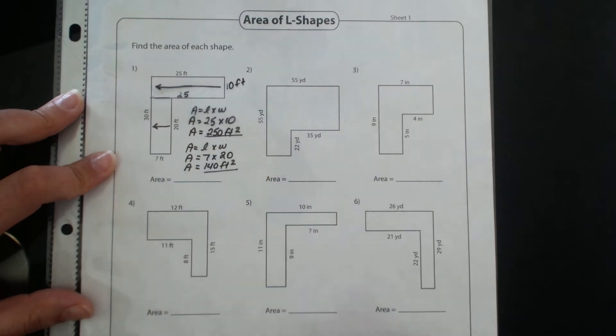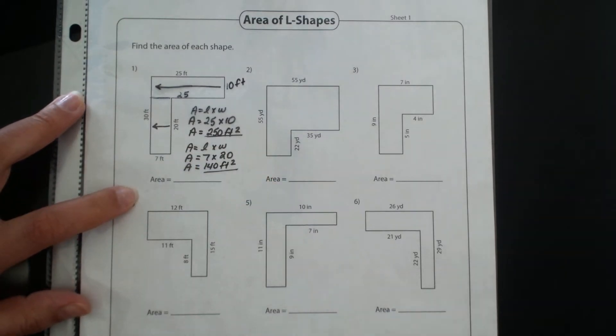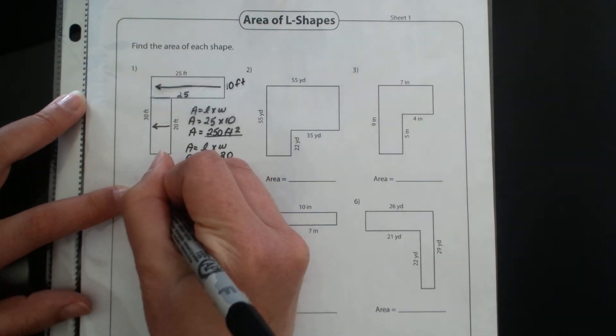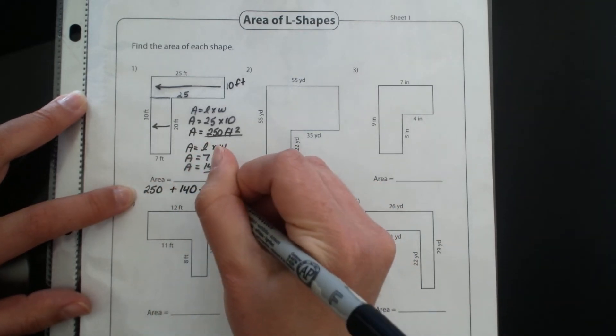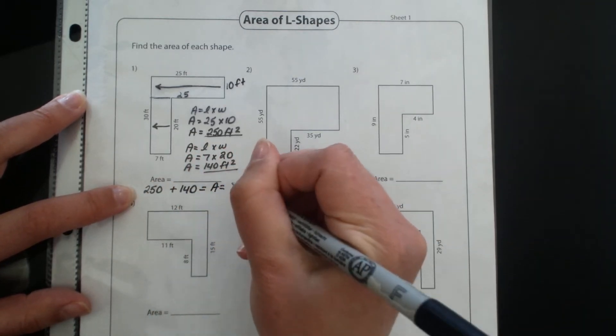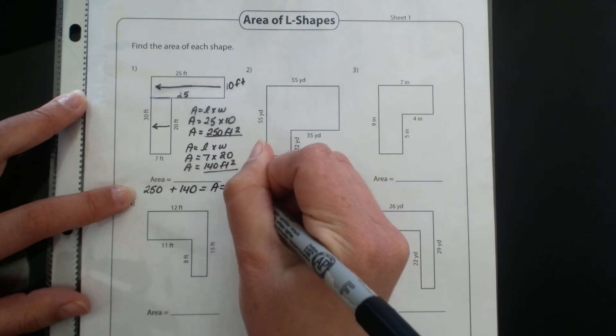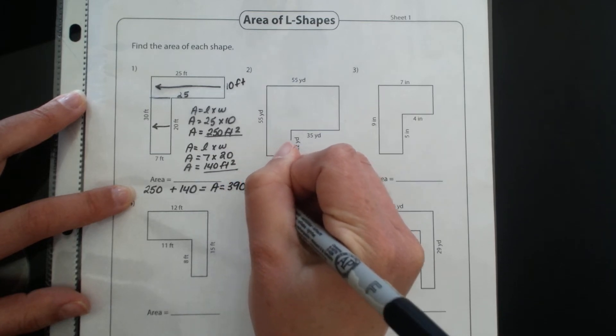So last step, I'm just going to squeeze it at the bottom here. Take 250 plus 140 and I get a grand total of an area of 390 feet squared.